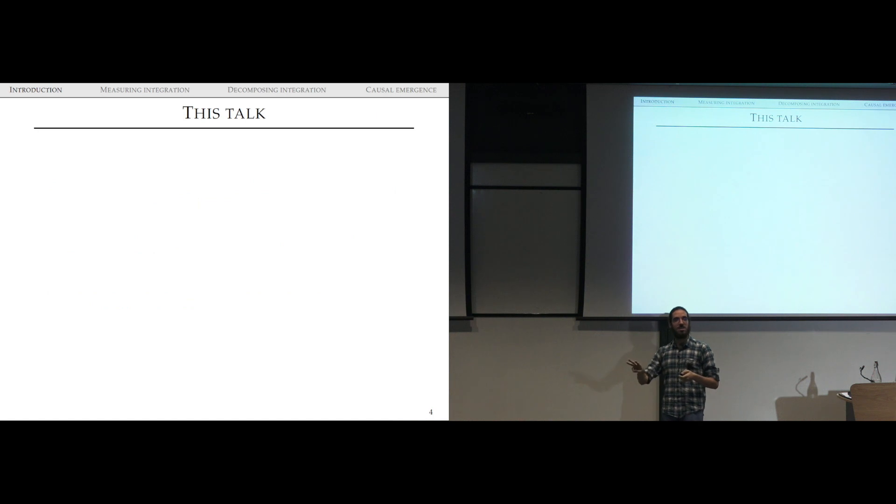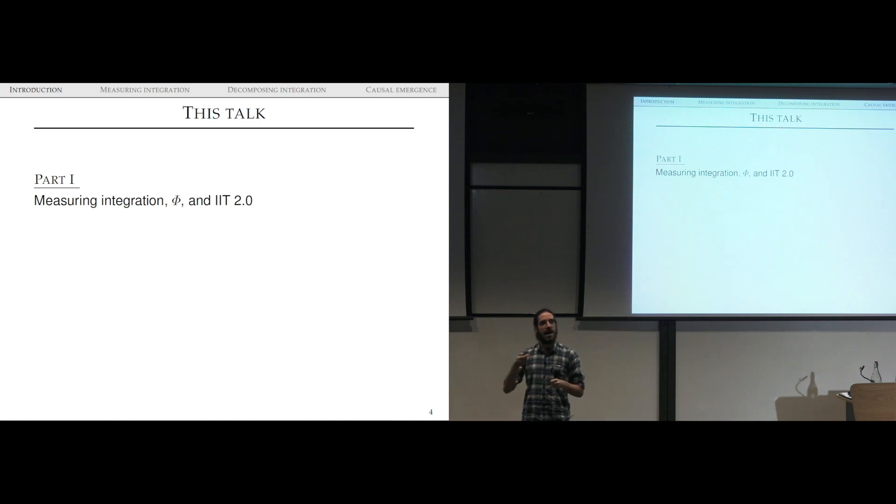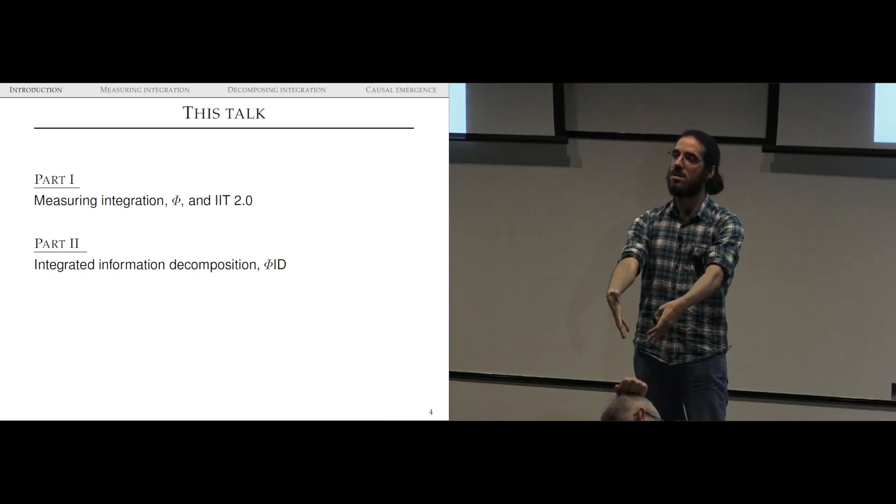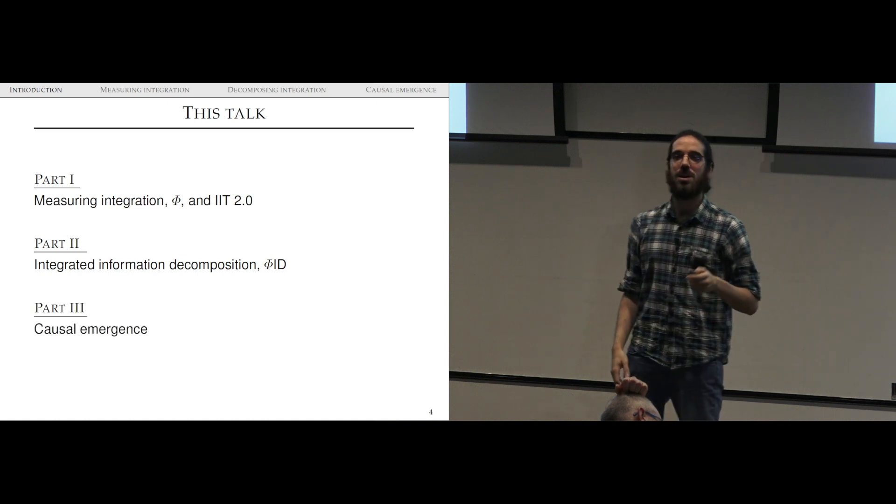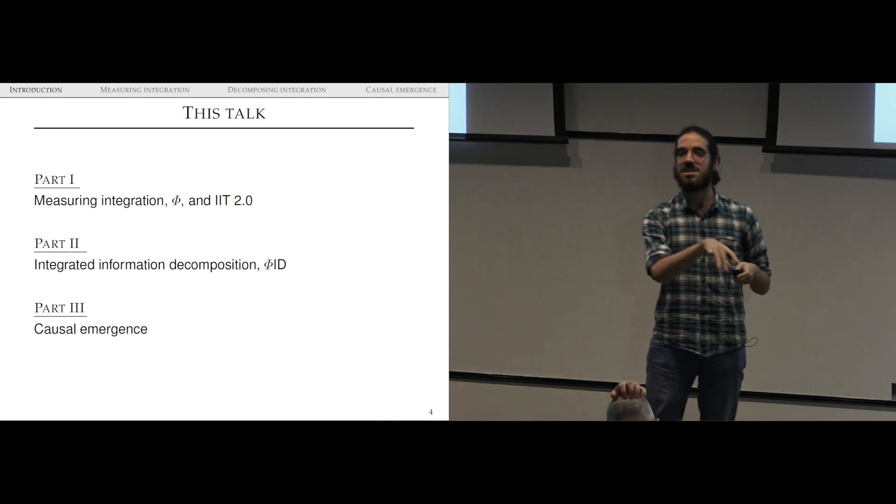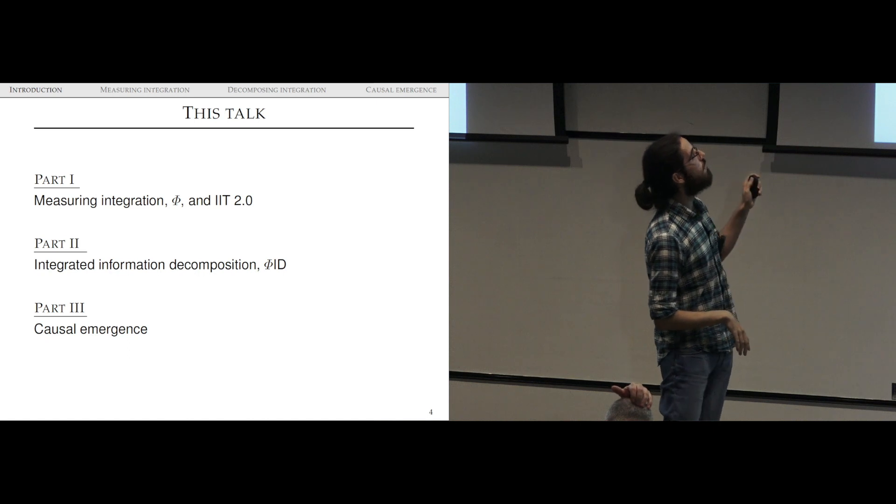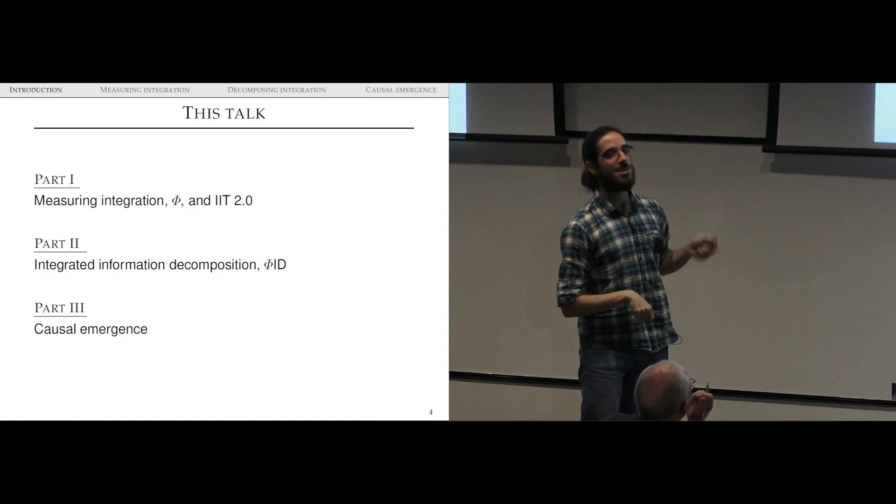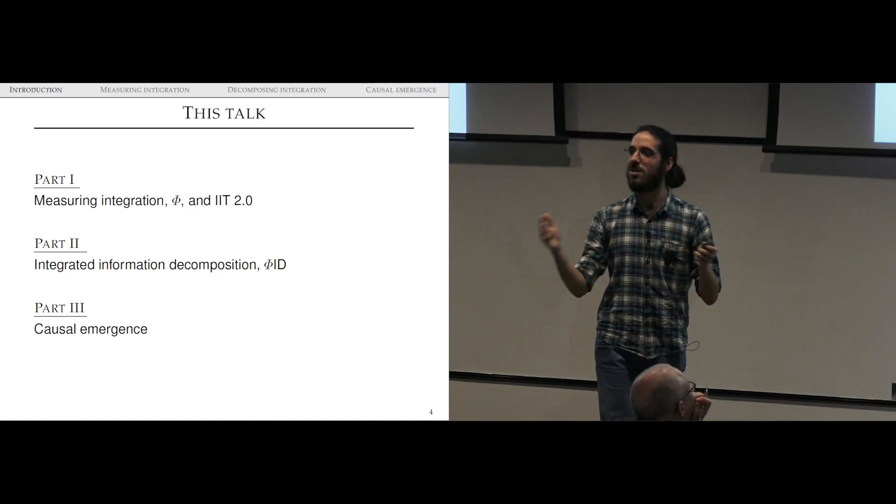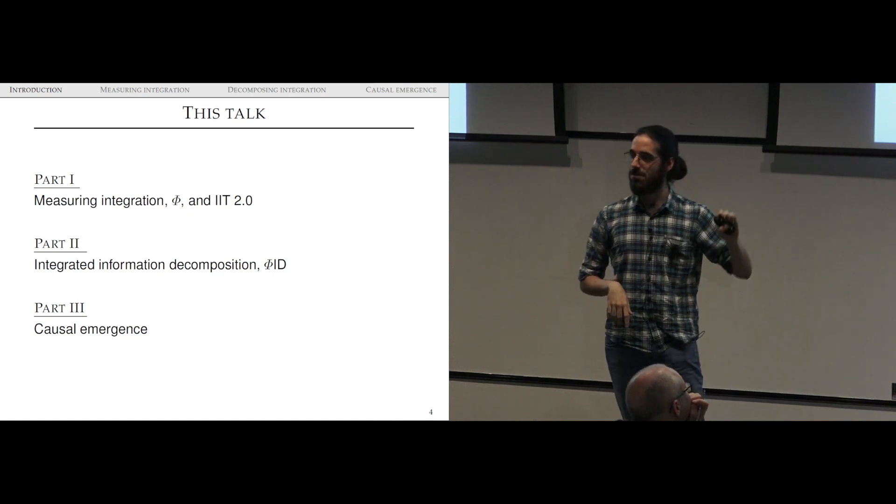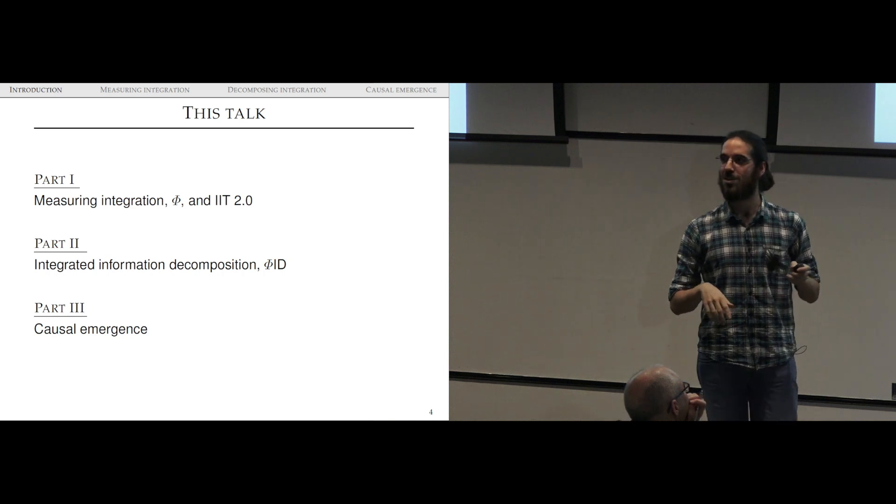I'm going to divide this talk in three parts, roughly. First, I'm going to be talking about measuring integration and phi measures, typically in the context of IIT 2.0. Then in part two, I'm going to be talking about this integrated information decomposition, or phi ID, in which we get these phi measures and we try and split them up and open them up and look inside and see what mathematical structures we find. And in part three, it's going to be a bit more speculative about what these things have to say about the nature of causal emergence. I'm quite confident that the math for parts one and two is quite correct. Part three is speculation, and I'm happy to debate about the philosophical implications.